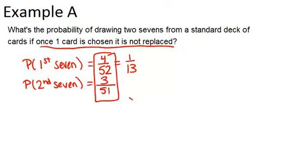So now we can actually use the multiplication rule because we have revised our second probability and didn't just say 4 out of 52 again, in order to figure out the probability of two sevens, getting a first a seven and second a seven.